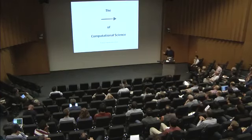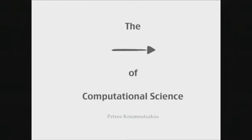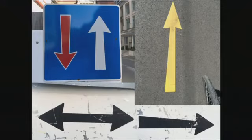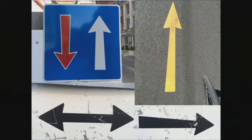The title of this presentation is 'The Arrow of Computational Science.' I need to do some explaining about the title. Speaking of arrows, these are some of the arrows that I see every day I come to work. After selecting this title, I noticed there are about 50 arrows that I see every day, and these arrows usually point to a certain direction. You may think that the arrow of Computational Science is about pointing to a certain direction.